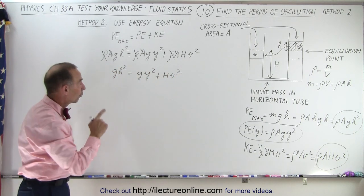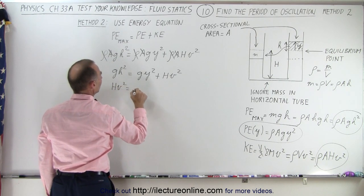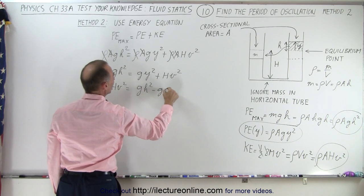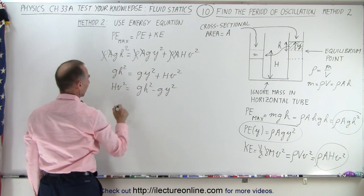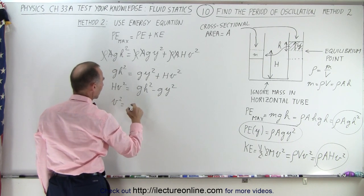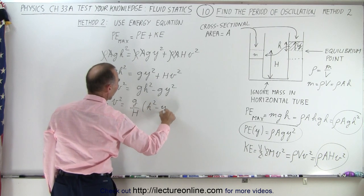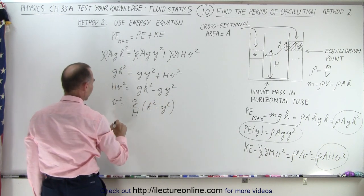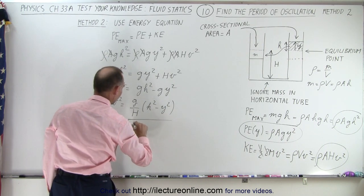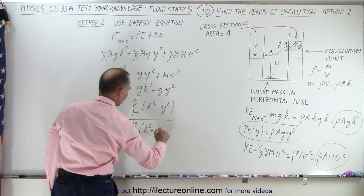Now we solve for V. We have HV² equals GH² minus GY². Then V² equals G over H times (H² minus Y²). Taking the square root, V equals the square root of G over H times (H² minus Y²).